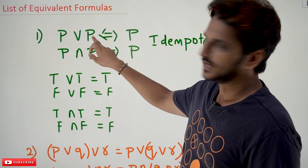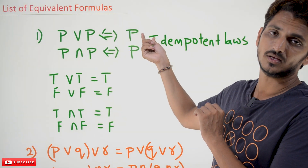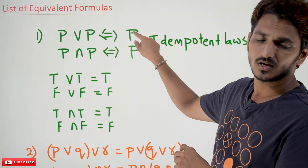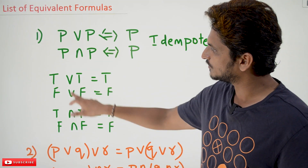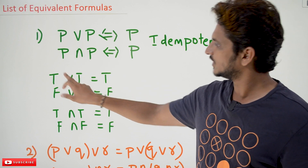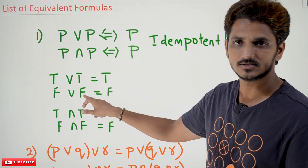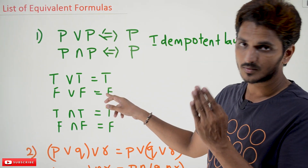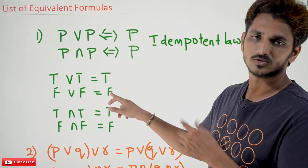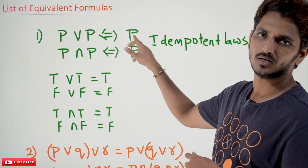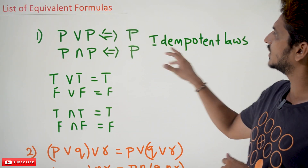P disjunction P can be equal to P. So if you have the equation P disjunction P, you can write it as P, and vice versa — both are equal. For example, if P is true, then true disjunction true equals true. If P is false, then false disjunction false equals false. So P disjunction P equals P. Similarly, P conjunction P equals P. These laws we call idempotent laws.